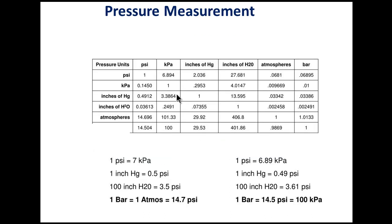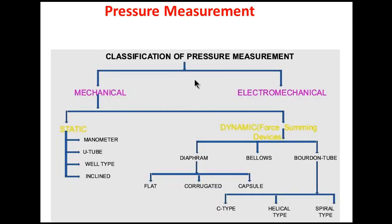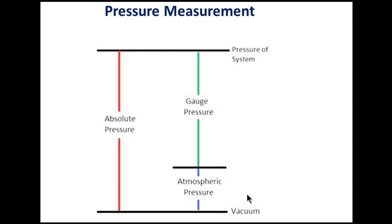Pressure measurement: pressure is defined as force per unit area. Unit conversions: 1 psi = 7 kPa; 1 atmospheric pressure = 14.7 psi; 1 bar = 14.5 psi = 100 kPa. Vacuum pressure is pressure below atmospheric pressure. Absolute pressure = gauge pressure + atmospheric pressure.